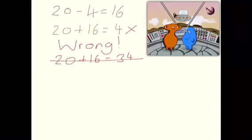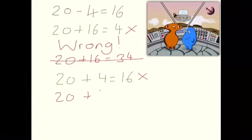So, we also can't do 20 add 4 equals 16. Because you know that 20 add 4 gives us 24, not 16. So, that number sentence doesn't work either. Great. Well done.